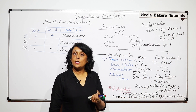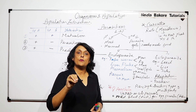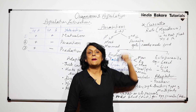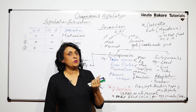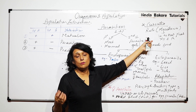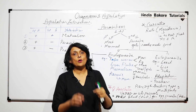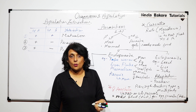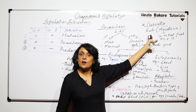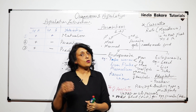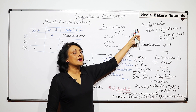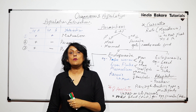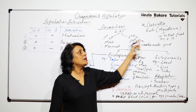Cuscuta's haustoria reach the xylem, which carries water, and the phloem, which carries food. So Cuscuta takes water from the xylem and food from the phloem of the host plant. Since it doesn't need to synthesize its own food, it has no leaves and no photosynthesis. It also has no true roots, as it doesn't absorb water from the soil — just a pipe-like stem structure. This obviously affects the growth of the host plant.